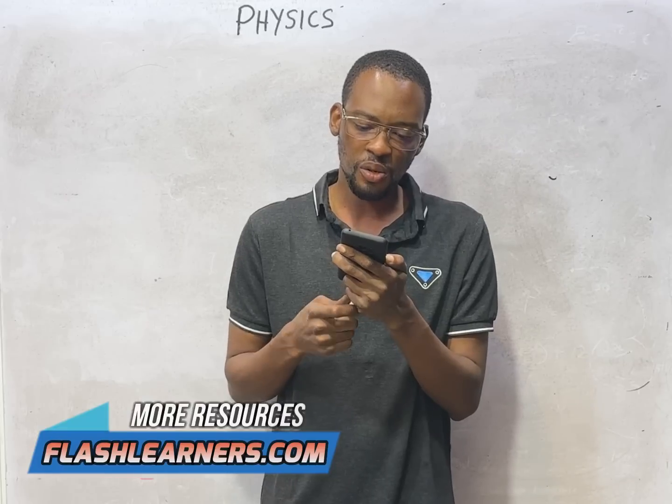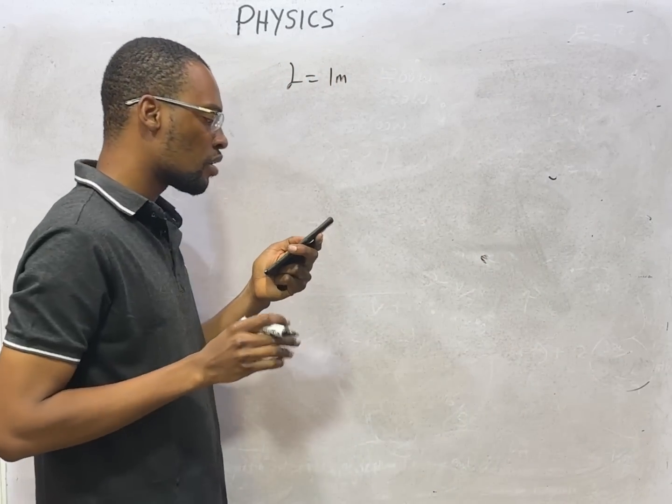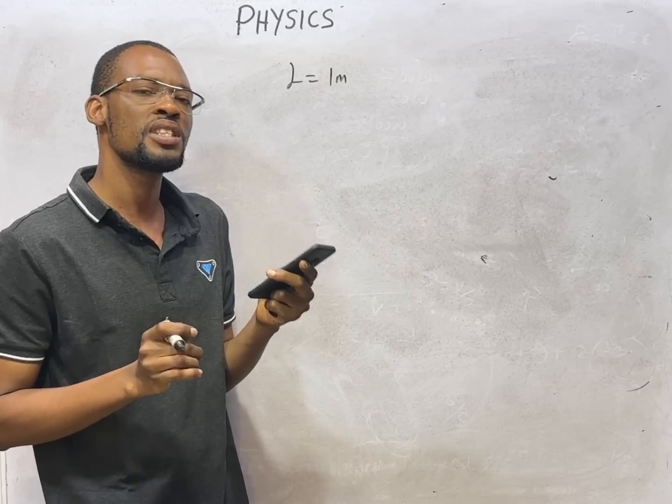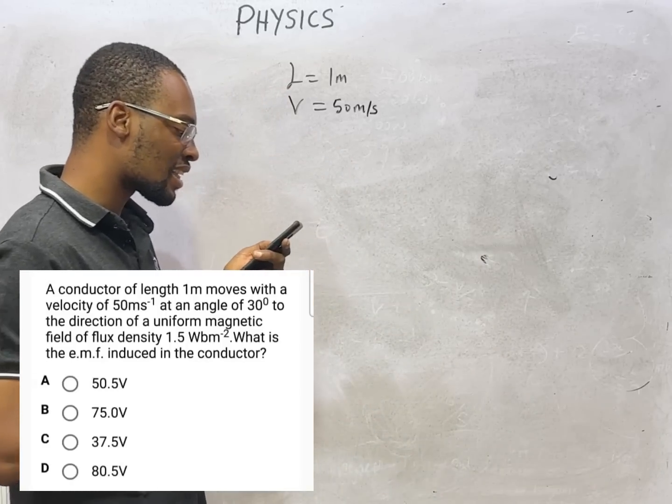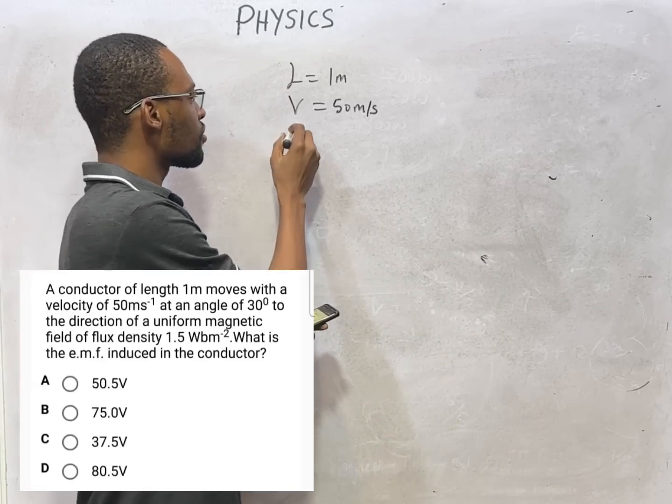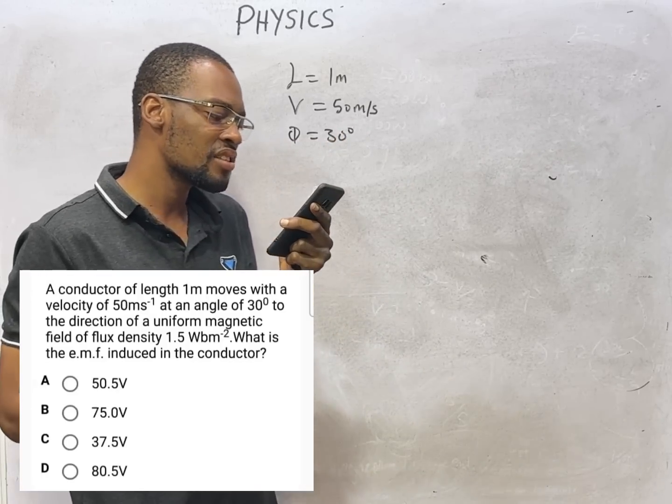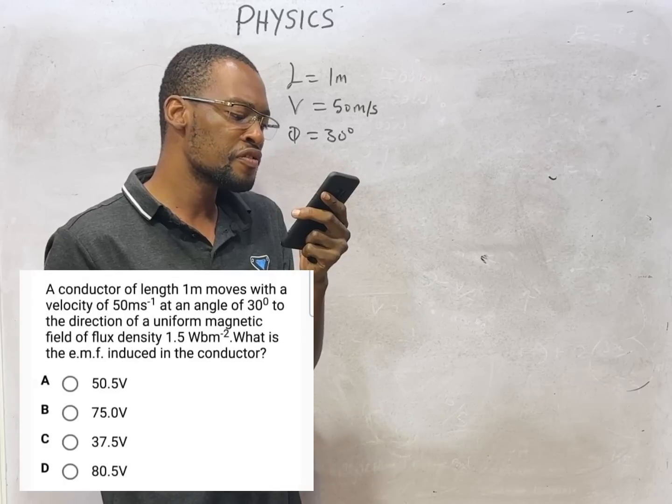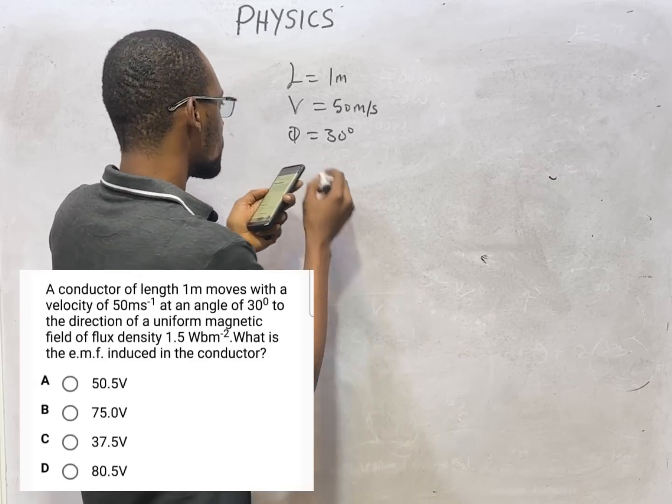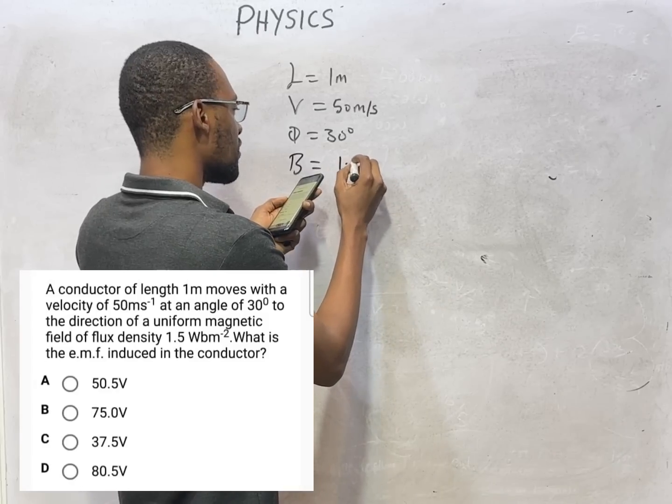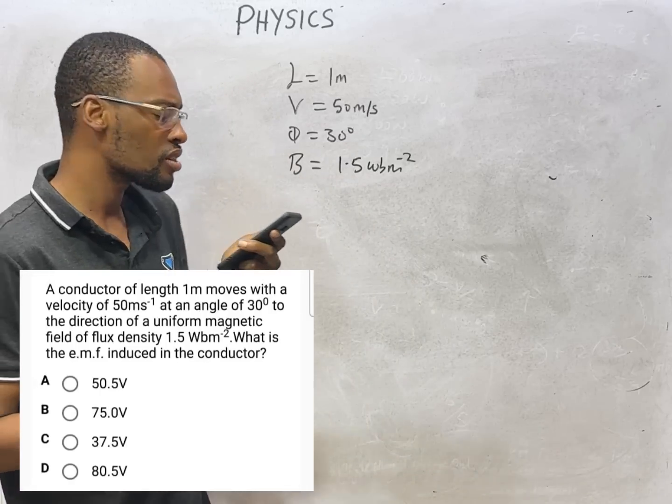A conductor of length 1 meter (L = 1m) moves with a velocity of 50 meters per second (V = 50 m/s) at an angle of 30 degrees (θ = 30°) to the direction of a uniform magnetic field. For this uniform magnetic field, the flux density B is 1.5 Weber per meter squared (1.5 Wb/m²). What is the EMF induced in the conductor?